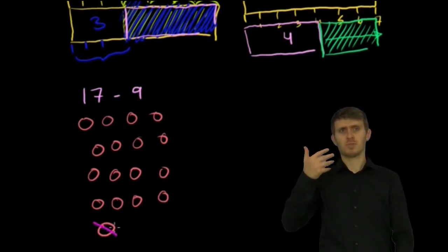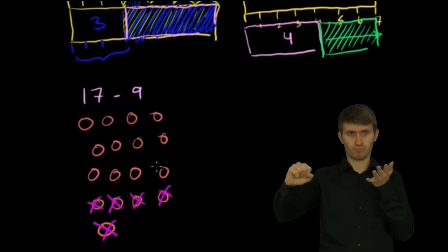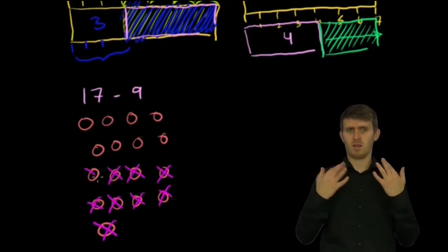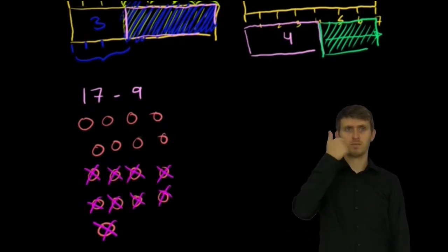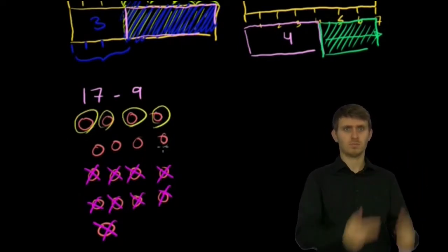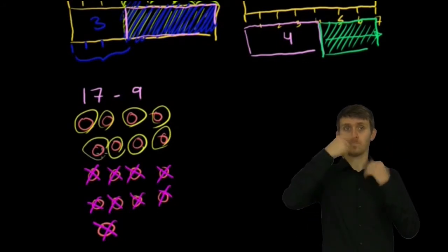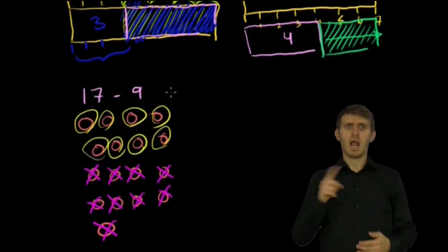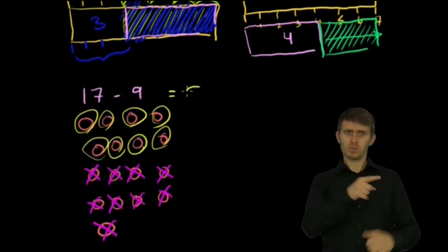And then I'm going to take away 9 of them. So I'm going to take away 1, 2, 3, 4, 5, 6, 7, 8, 9. How many am I left with? I'm left with 1, 2, 3, 4, 5, 6, 7, 8. So 17 minus 9 is equal to 8.